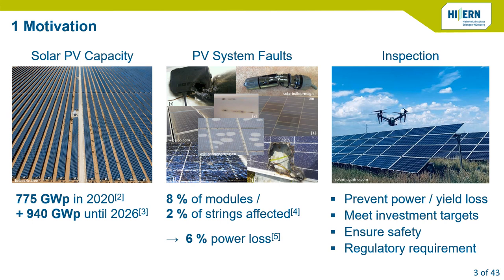We want to prevent these power and yield losses, and that's why we want to do inspection — to identify failures and possibly repair or mitigate the causes. That's important to help meet the investment targets of these plants and ensure the economic success of solar PV. It is also a safety aspect, because in some cases these failures could cause fires, and especially if the plants are mounted on rooftops, that's also a regulatory requirement in some cases.